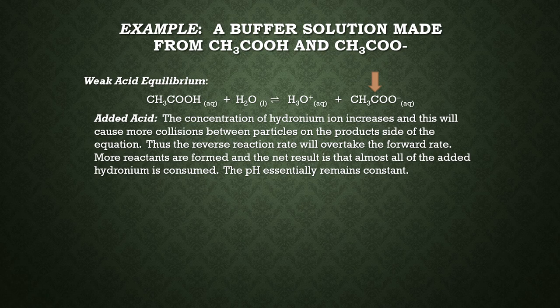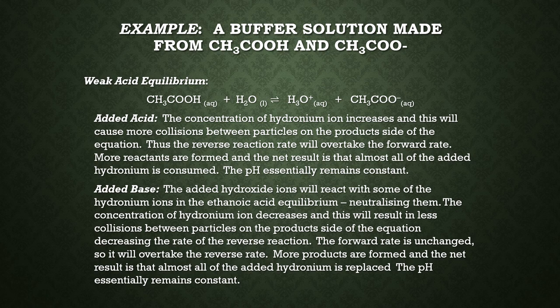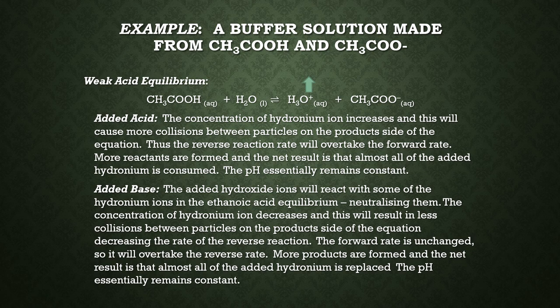Reacting with the added hydronium reduces the ethanoate ions present — that comes into buffer capacity, which we'll get to shortly. If we look at adding base, the added base will consume the hydronium ions by neutralising them. That means collisions between the product particles decrease, the forward rate is unaffected and overtakes the reverse reaction, and the hydronium ions are replenished — those taken out by neutralising with hydroxide are therefore replaced. The net result is the pH is essentially constant. We can't completely replace what was taken, but because of the high concentrations of both the weak acid and conjugate base, the pH essentially remains the same.